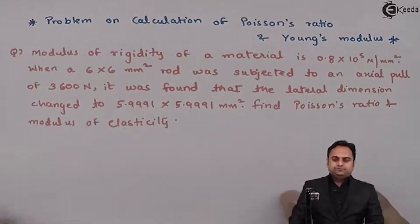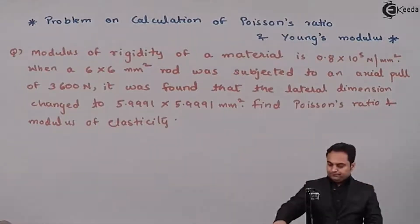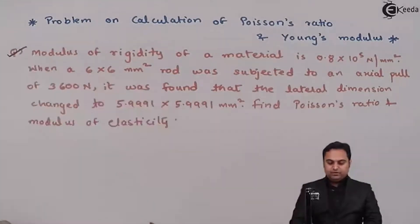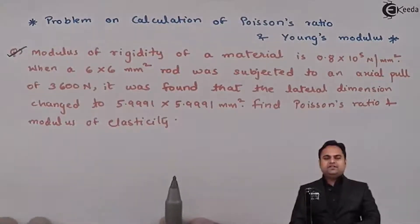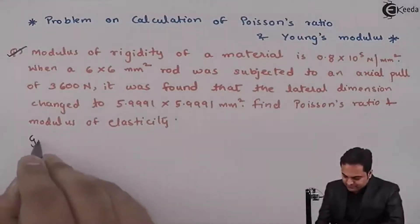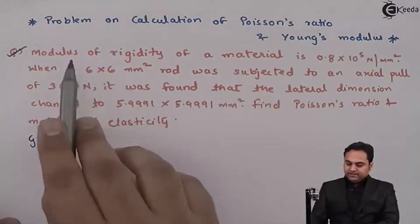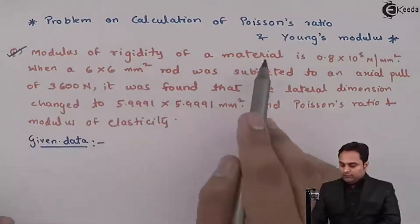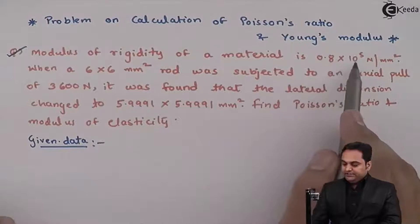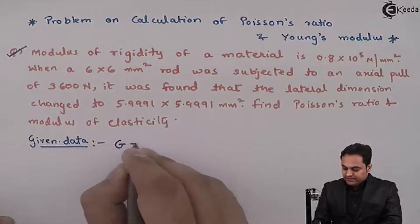Hello friends, in this video we are going to see a problem on calculation of Poisson's ratio. It is given that the modulus of rigidity of a material is 0.8 into 10 raised to 5 Newton per mm square. Modulus of rigidity is denoted by capital G.